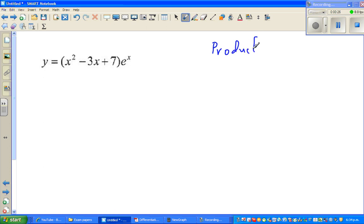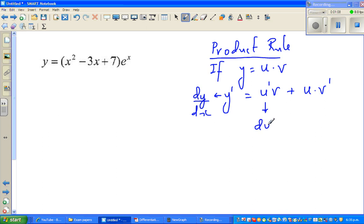The product rule is like this: If y is equal to u times v, then y prime, which is dy/dx - this is an elegant way of writing dy/dx, you should not be confused - is u dash times v plus u times v dash. Now u dash means du/dx, and this means dv/dx. So this is the rule.